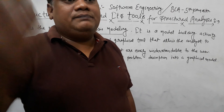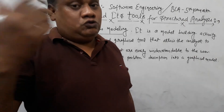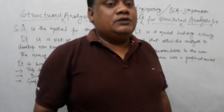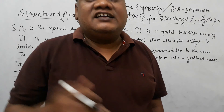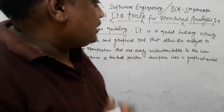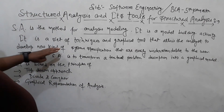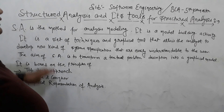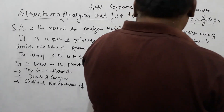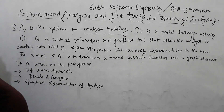If we understand the graphical format, we can understand it much more easily than plain text. The graphical representation plays a very good role because we provide a flow where models and information are linked. The aim of software engineering is to transform a textual problem description into a graphical model.